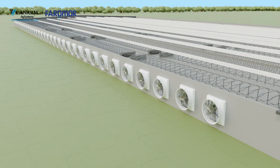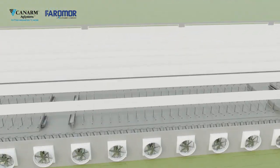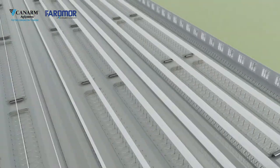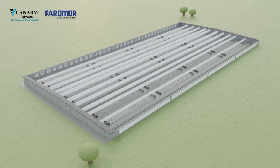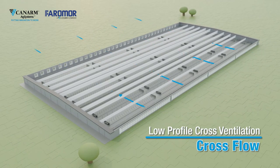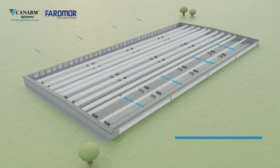Large volumes of air can be moved through wide barns using a low-profile cross-ventilated system. The ability to control the flow, speed, and path of the airstream provides a more comfortable environment for your animals year-round. The design takes up a smaller footprint and is less affected by surrounding conditions than natural ventilation systems, and is often chosen for large milking herds to reduce the distance cows have to walk to the milking parlor.